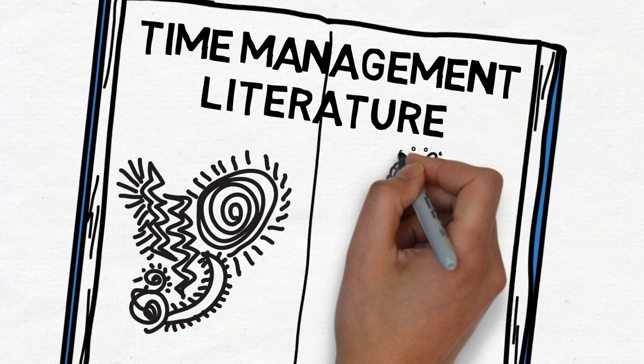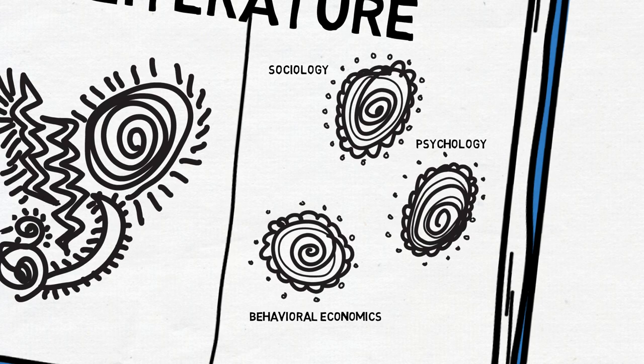But we noticed that there are many ideas out there in sociology, psychology, and behavioral economics that can help us make sense of this mess. So we integrated ideas from these different disciplines and came up with three novel perspectives that explain why time management may or may not work.